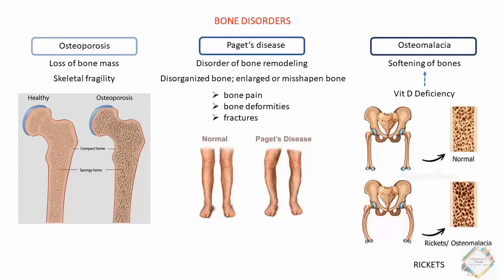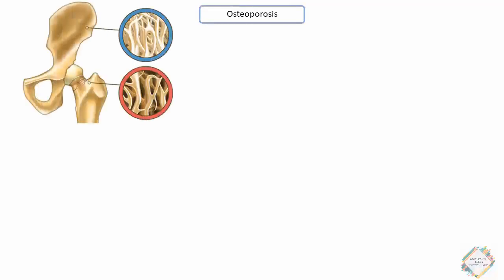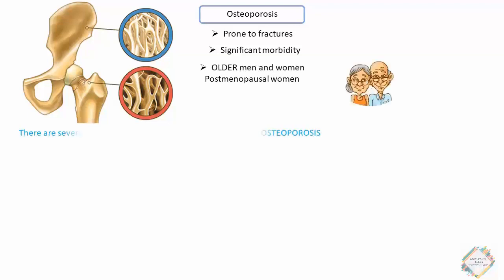The most common of the three disorders is osteoporosis, and this video will mainly focus on its drug therapy. Osteoporosis is characterized by progressive loss of bone mass and skeletal fragility, giving patients an increased risk of fractures and significant morbidity. It affects older men and women but is most pronounced in post-menopausal women, because estrogen plays a very important role in bone health by promoting osteoblast activity.